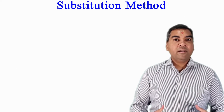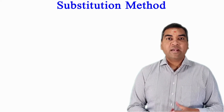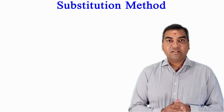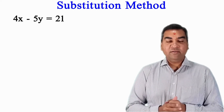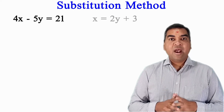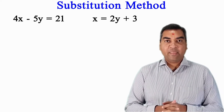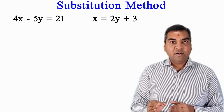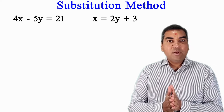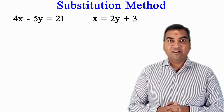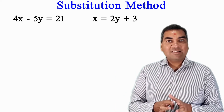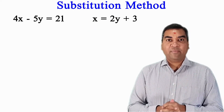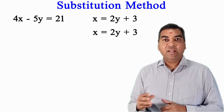Let us reinforce our learning with one extra example. I have two equations: 4x minus 5y equal to 21, and x equal to 2y plus 3. Rule number one: in one of the equations, either x or y needs to be by itself. As we can see, in the second equation — x equal to 2y plus 3 — x is the subject, so that works perfectly well.